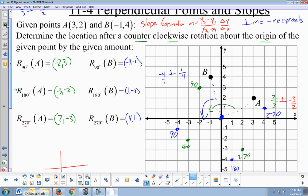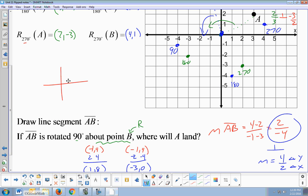That point A is 3, 2. So over 3, up 2. That's A. And B is negative 1, 4. That's B. So here are these points. So 90 degrees is going to be something like this. I'm going to point here or point here. This is 90. This is 270.